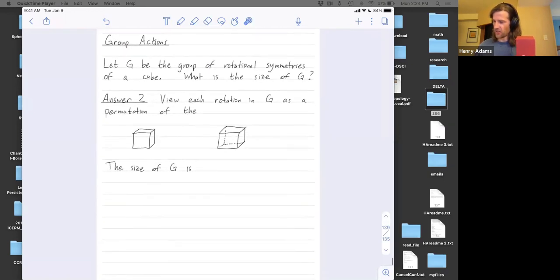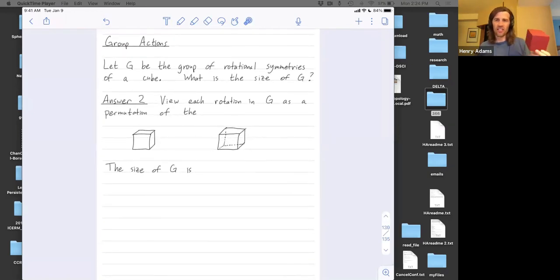So answer two. Let G be the group of rotational symmetries of this cube. What is the size of this group? Let's now instead view each rotation as a permutation of the eight vertices. Maybe I'll call my vertices A, B, C, D, E, F, G, and H.